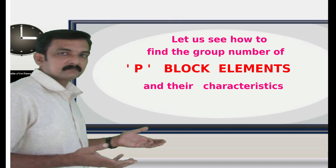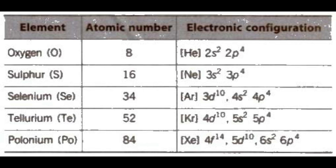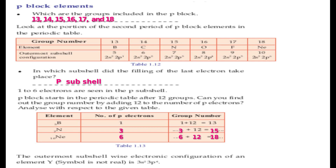Let us see how to find the group number of p-block elements and their characteristics. The p-block includes groups 13, 14, 15, 16, 17, and 18. The last electron is filled in the p sub-shell for these elements. To determine the group number of p-block elements, we add 12 to the number of electrons in the last p sub-shell.